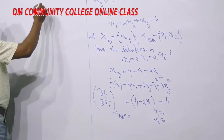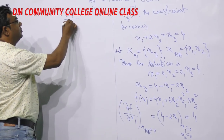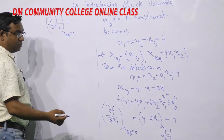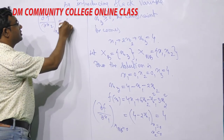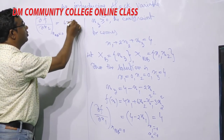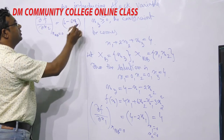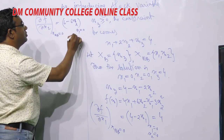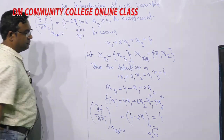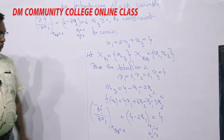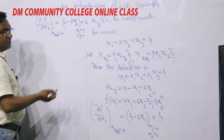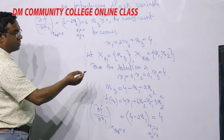Next, find ∂f/∂x2 evaluated at x_nb = 0. Taking the derivative with respect to x2 gives 6 − 6x2. Putting x2 = 0, it becomes 6. Since ∂f/∂x1 and ∂f/∂x2 are both positive, this indicates that the initial basic feasible solution is not optimal. We need to improve further.